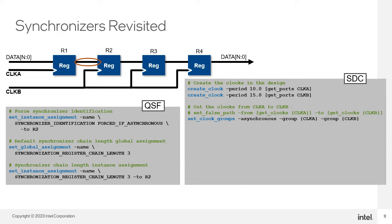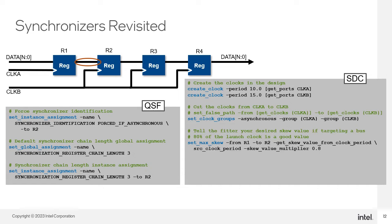Instead of using the set_false_path constraint, you can use the set_clock_groups constraint. This tells Timing Analyzer not to analyze paths from clock domain A to clock domain B, as well as from B to A, making it bidirectional — whereas set_false_path is unidirectional. After cutting paths between clock domains, skew problems with a bus can still arise, and the set_max_skew SDC command is needed. The set_max_skew command targets registers in both clock domains. A good number to use for the skew value is 80% of the source clock period. When using the source clock period option in the set_max_skew command, you also need to include the skew value multiplier option.